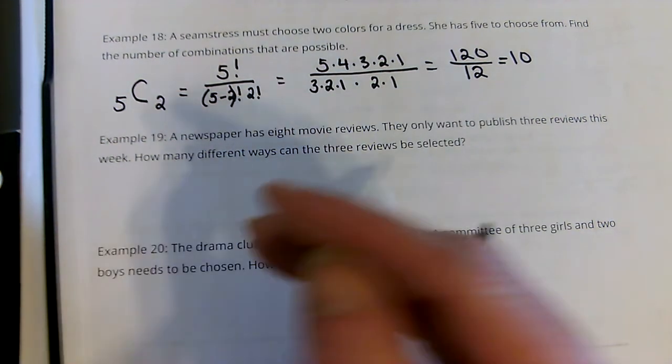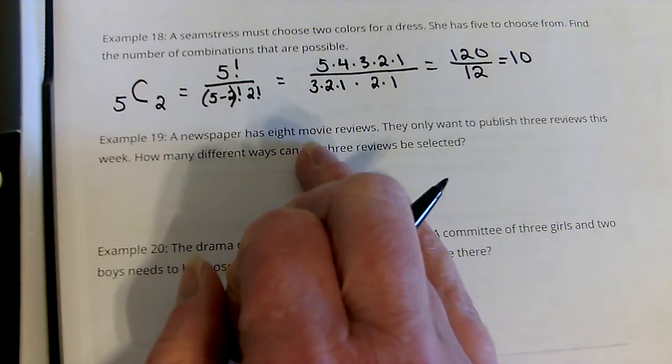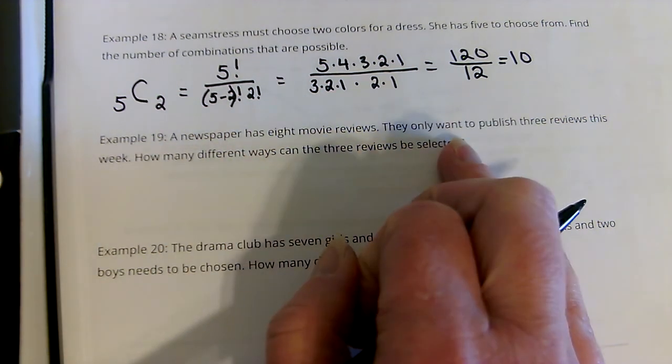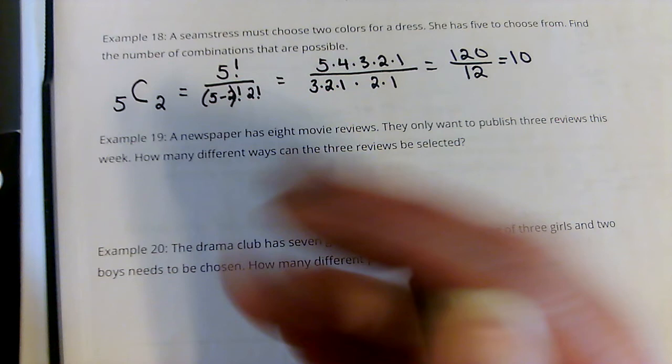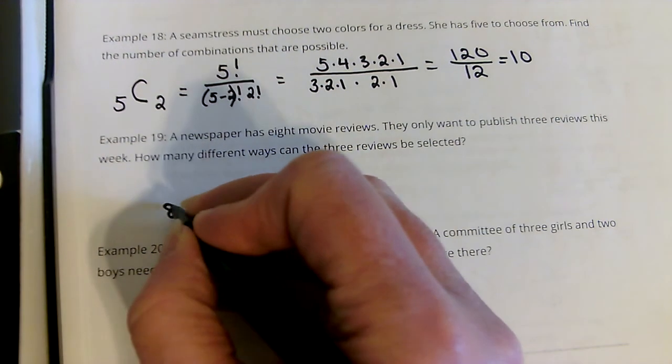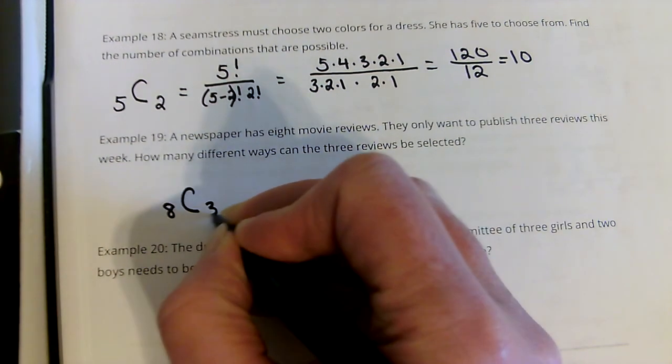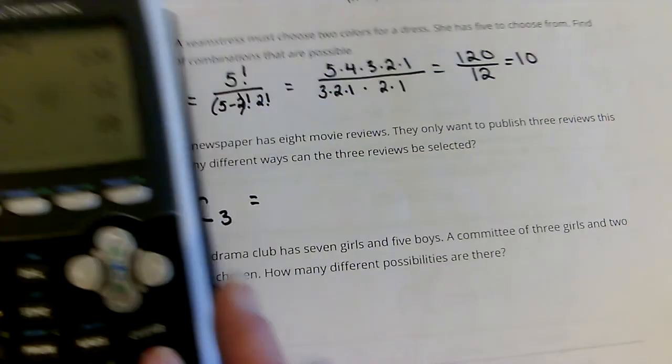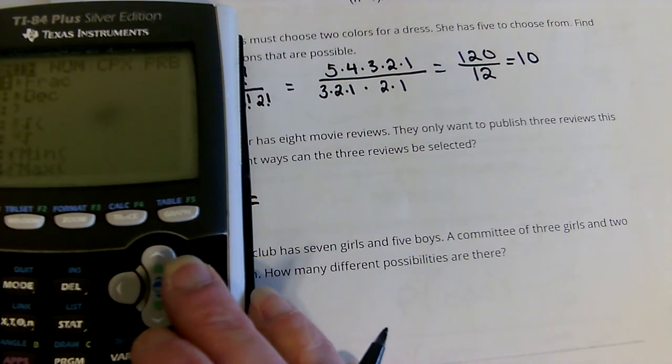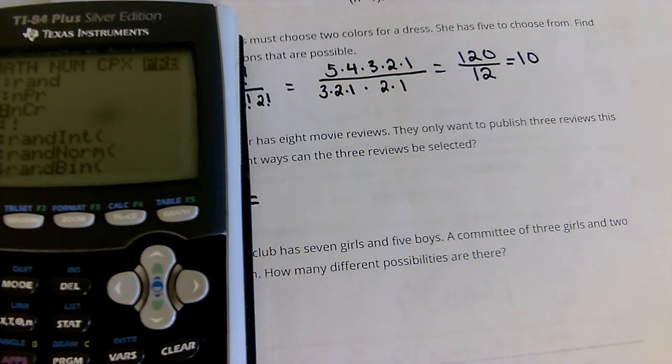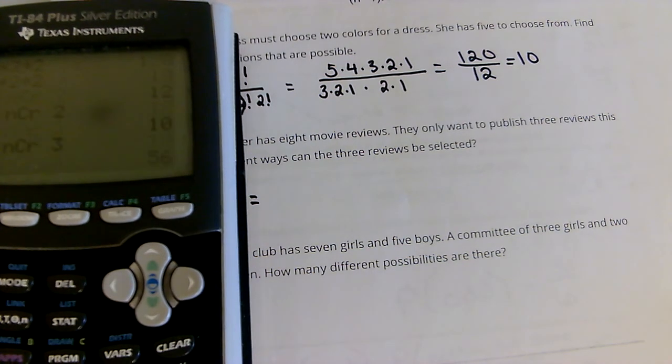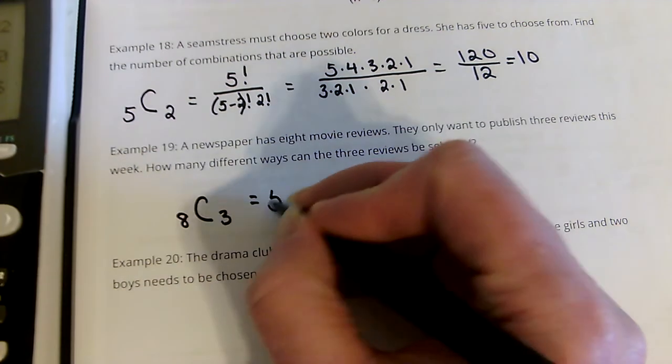So, calculator tends to be a little bit easier on these. Let's say we have 8 movie reviews and they only want to publish 3. Notice it doesn't say that the order matters at all. So, it's 8 choose 3. I'm just going to use the calculator. 8 choose 3. That's 56.